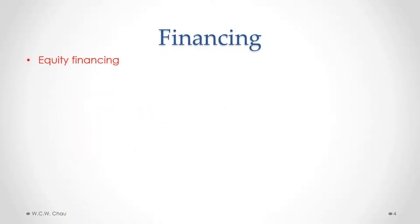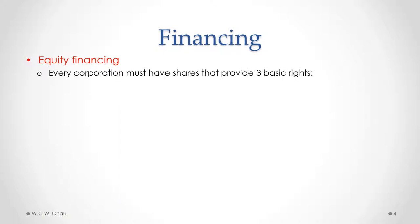With equity financing, which involves the corporation obtaining capital by issuing shares, every corporation must issue shares that provide at least three basic rights. All three basic rights don't have to be in one type of share — they can be found across different types of shares issued by the corporation. The simplest way is to issue one class of common shares that has all three of these basic rights.